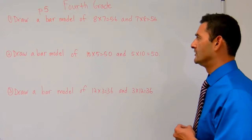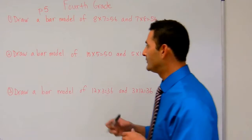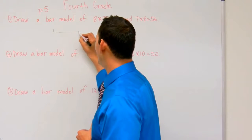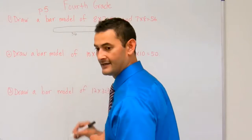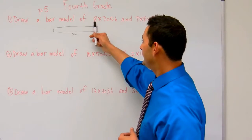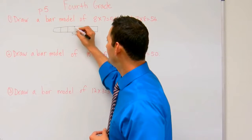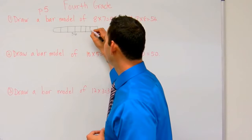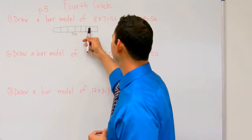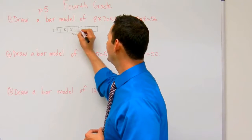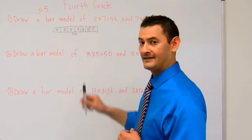Number 1 says draw a bar model of 8 times 7 equals 56. So I'm going to draw a bar model — the total is going to be 56. Here it says 8 times 7, so I'm going to make 7 sections, each worth 8. So 8 times 1, 2, 3, 4, 5, 6, 7 — that's one way.